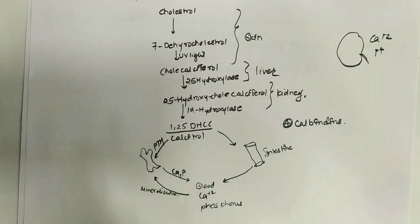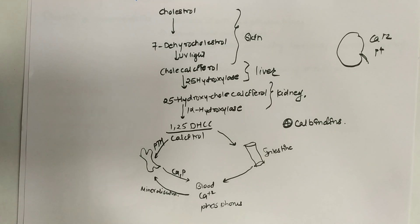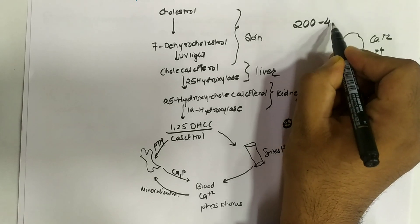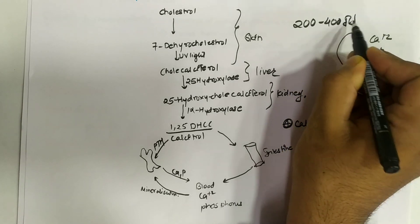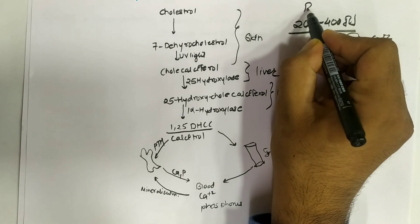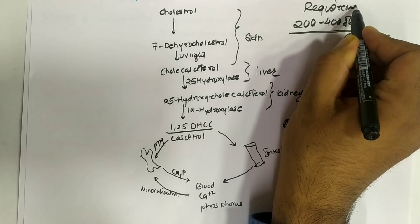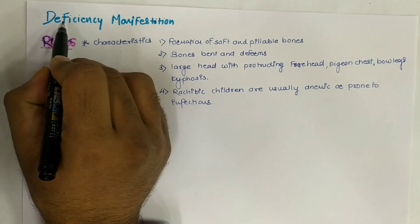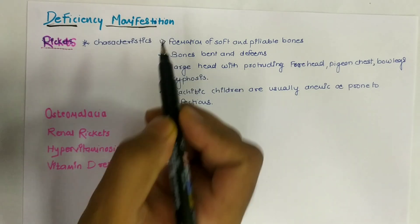The nutritional requirement of vitamin D in the body is approximately 200 to 400 international units (IU).